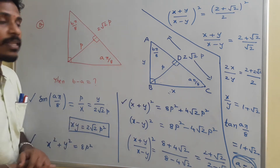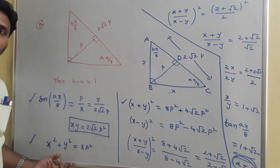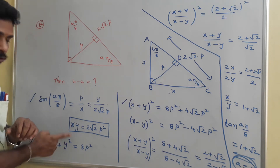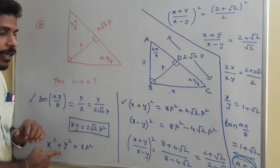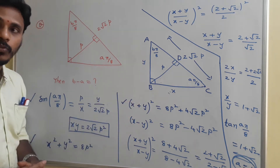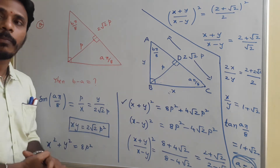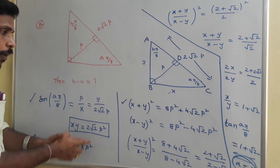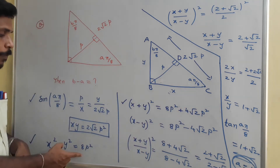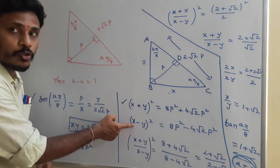On the other path, applying the Pythagorean theorem: x² + y² equals the hypotenuse squared, so x² + y² = 8p². Now compute (x+y)² and (x−y)²: (x+y)² = x² + y² + 2xy and (x−y)² = x² + y² − 2xy. Substituting: (x+y)² = 8p² + 2·(2√2·p²) = 8p² + 4√2·p², and (x−y)² = 8p² − 4√2·p².